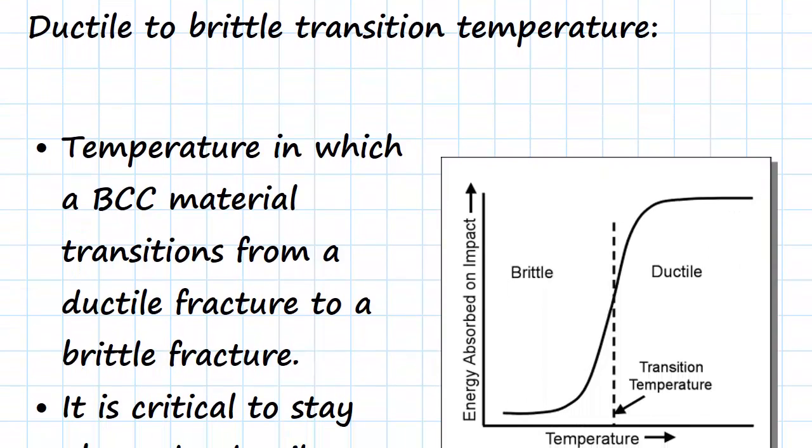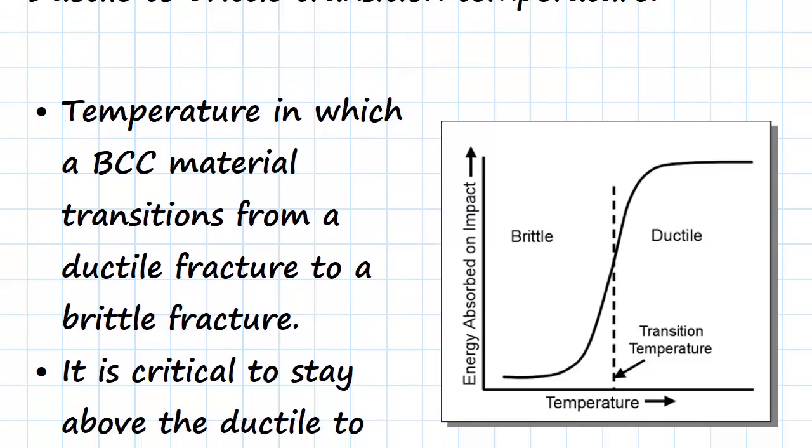So before we start with that, let's have a look at the ductile to brittle transition temperature. This is a temperature in which a BCC material transitions from a ductile fracture to a brittle fracture. If you can see here on this image to the right,